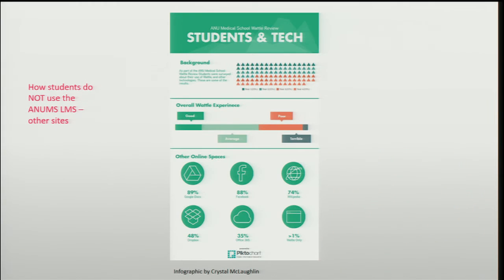The teaching and learning is done more face-to-face in lectures, but they do have rural and remote students, so it's important to get it right. From our survey we created some infographics. Looking at other online spaces where students go to communicate and organise themselves — they don't use Moodle. The places they use are Google Docs, Facebook, Wikipedia, Dropbox, and Office 365 — examples of the online spaces students use to organise themselves in order to get through the course.